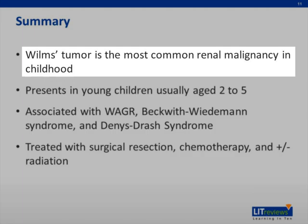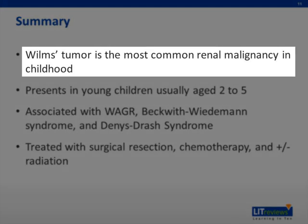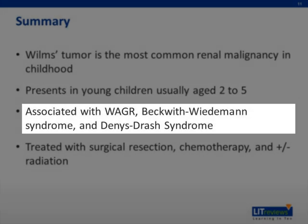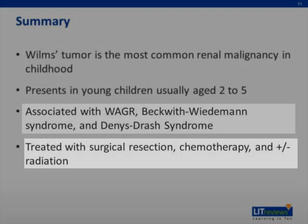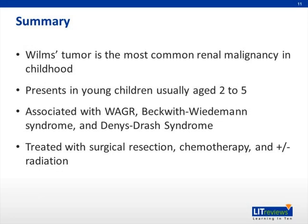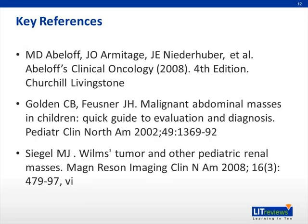In summary, Wilms tumor is the most common renal malignancy in childhood. It presents in young children, usually less than 5 years of age. It is associated with three syndromes: WAGR (Wilms, aniridia, GU anomalies, and mental retardation), Beckwith-Wiedemann syndrome (an overgrowth disorder), and Denys-Drash syndrome. It is treated with removal of the tumor, chemotherapy, and/or radiation.